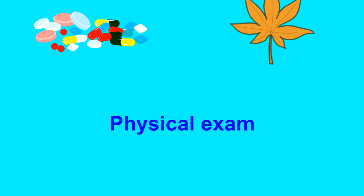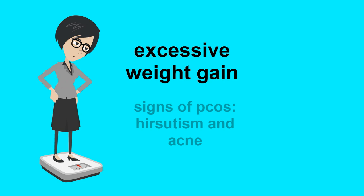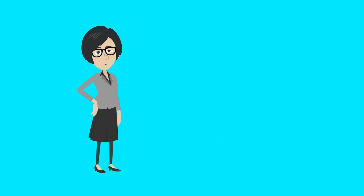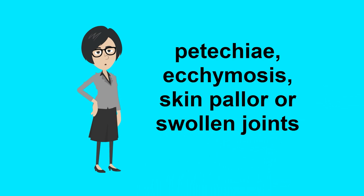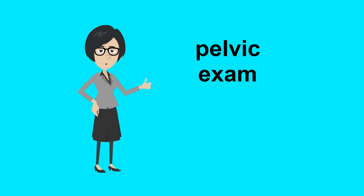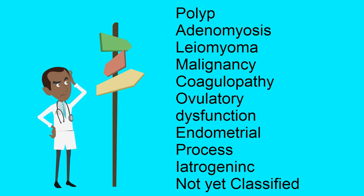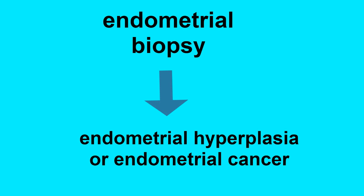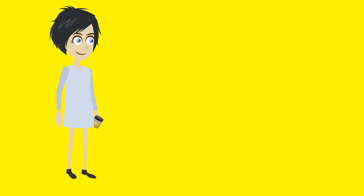Let's move on to the physical exam. Look for signs of excessive weight gain, signs of PCOS such as hirsutism and acne, thyroid disease, and signs of insulin resistance. Physical exam findings suggestive of a bleeding disorder include petechiae, ecchymosis, skin pallor, or swollen joints. Pelvic examination including bimanual examination should be performed to assess the size and contour of the uterus. When deciding on diagnostic testing, there should be a low threshold to perform an endometrial biopsy to rule out endometrial hyperplasia or cancer for women over 40 or with risk factors such as obesity or diabetes. Laboratory evaluation should include a CBC to look for anemia and a TSH to rule out thyroid disease. Don't forget to evaluate for pregnancy in any reproductive-aged woman. A pelvic ultrasound is usually the best radiologic study for evaluation of the gynecologic organs.